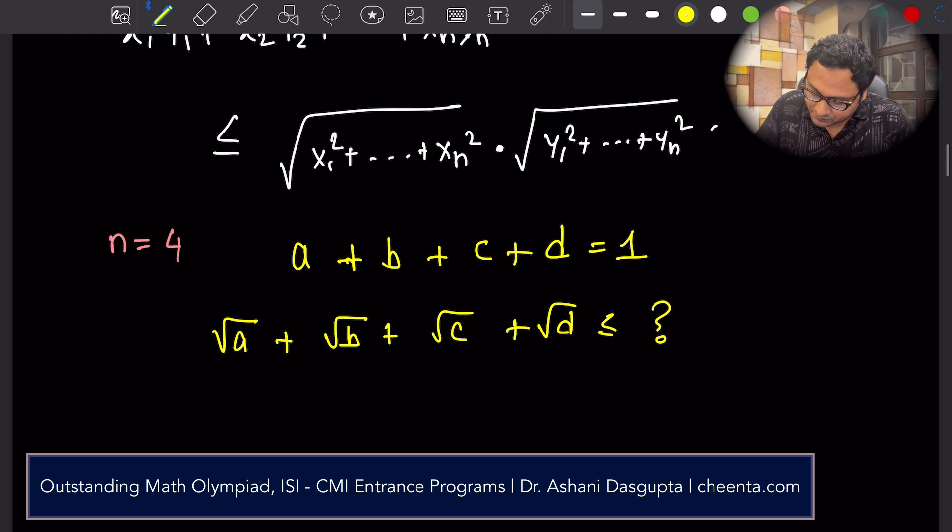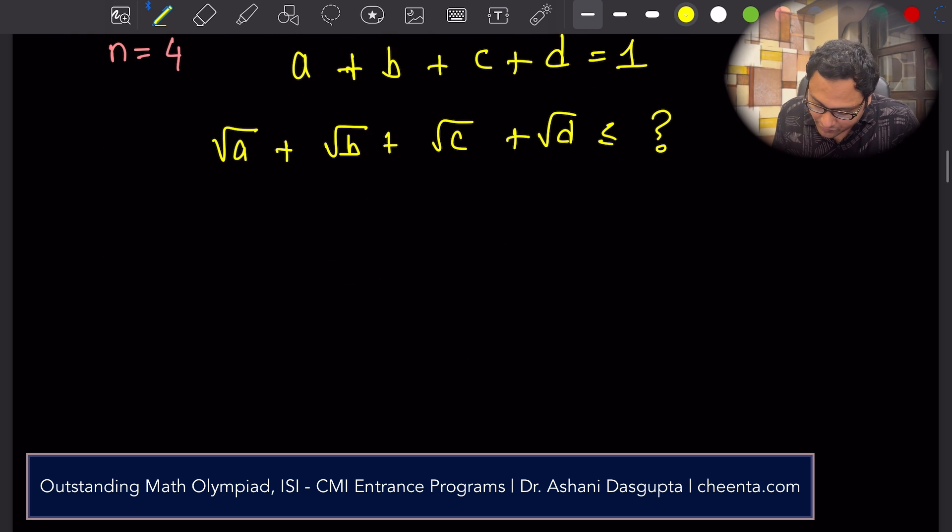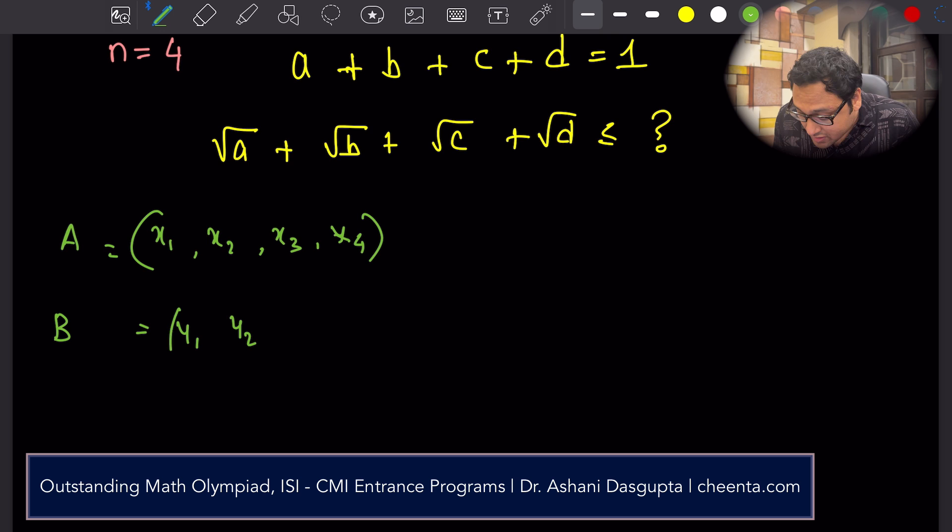I'm going to set it up in the form of Cauchy-Schwartz inequality. So here is the way we do it. You have x1, x2, x3, x4. That's the first point. And the second point is y1, y2, y3, y4.